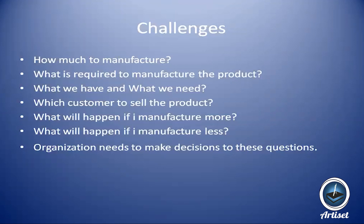What is required to manufacture the product? We need the aerated drink concentrate, bottles, labels, caps — everything should be in stock. We first check what we have in stock and what we need. Say we need to manufacture 500 bottles of this cold drink. We check — 100 are already manufactured and available. So we need to manufacture 400 more. For those 400, we need 400 bottles, 400 caps, and 400 labels. Then we check how much to buy from vendors — say we have 50 caps, so we need to buy 350 caps.